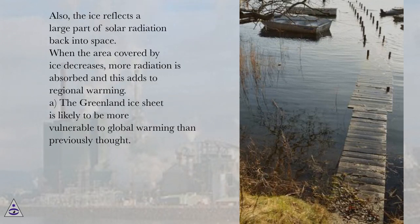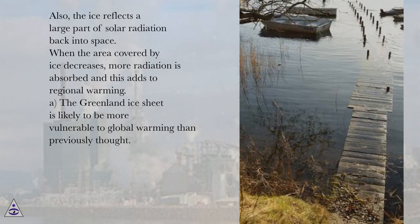Also, the ice reflects a large part of solar radiation back into space. When the area covered by ice decreases, more radiation is absorbed and this adds to regional warming.